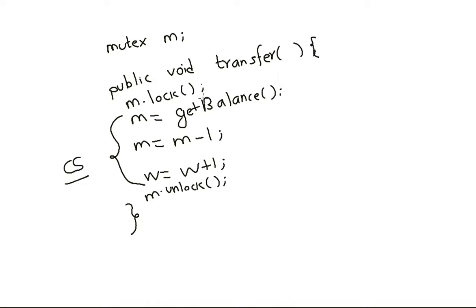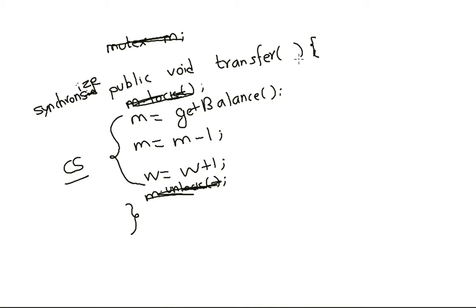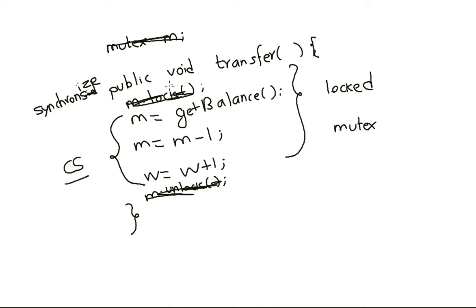There are other ways to secure a critical section in Java. There is a keyword called synchronized that is used for synchronizing the entire subroutine. With synchronized, we do not require explicit locking and unlocking — it implicitly means the function is executed by only one thread at a time. The flip side is that the entire method is locked by default. So if only a small portion of the method needs to be locked, use Mutex. If the entire method needs to be locked, simply use the synchronized keyword.